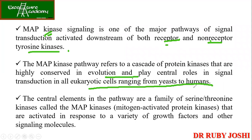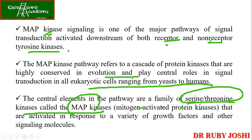We have to learn more about MAP kinase. It refers to a cascade of protein kinases that are highly conserved in evolution, and hence they play important roles in signal transduction in all eukaryotic cells, ranging from yeast to humans. These are serine-threonine kinases — MAP kinases — and MAP stands for mitogen-activated protein.